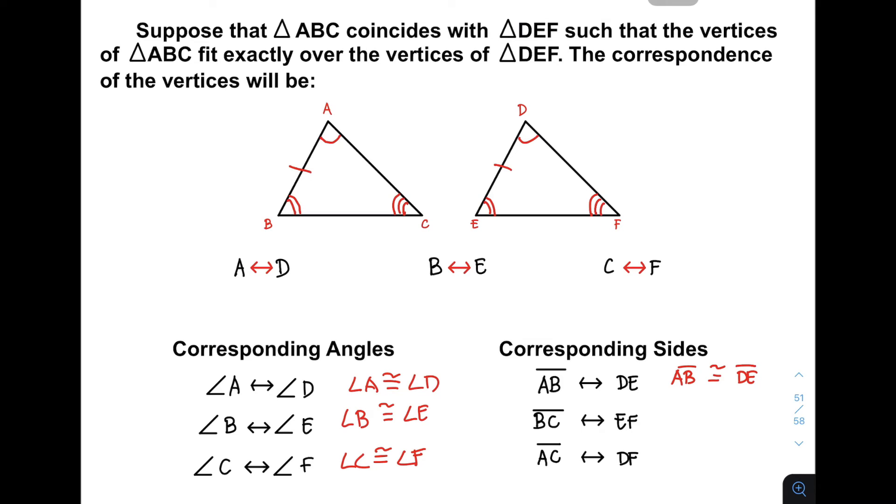Another thing that we can do here is that since your BC corresponds to EF, I will be using two markings. So you can say that BC is congruent to side EF.